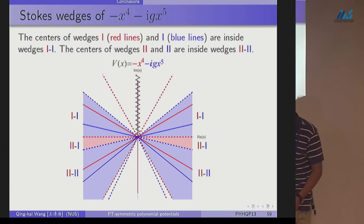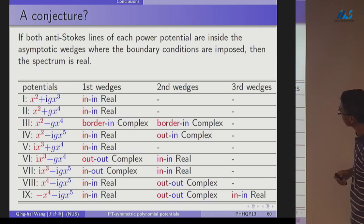So this is the table for all the nine potentials I studied. If they're both inside, it's real. No symmetry breaking. In, in, real. For this case, it's the border line. One of the center lines is actually in the border. Because x squared, the center is real axis. Which is the border of the minus x to the four potential. So this, if it's a border and in, complex. In, in, real, out, out, complex. Now, you can see with this, at least for this many examples, we have, I have a conjecture.